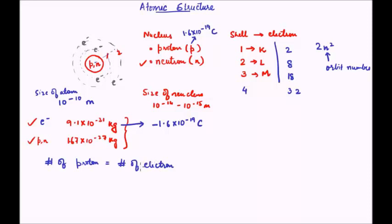This number — the number of protons equal to the number of electrons — is known as the atomic number. Atomic number is basically equal to the number of protons in an atom and is denoted by Z.